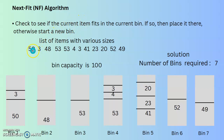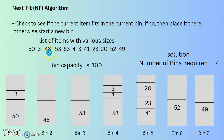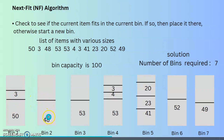According to this algorithm, take the first item 50 and put it in the first bin. Next item 3 — check whether this item can be placed in the current bin. It is possible because the bin capacity is 100, so place 3 there. But item 48 cannot be placed in the first bin since we have already used 53. So we start a new bin and place 48 in bin 2.